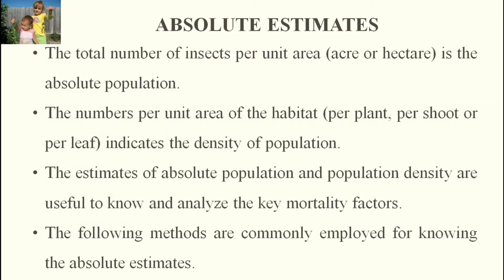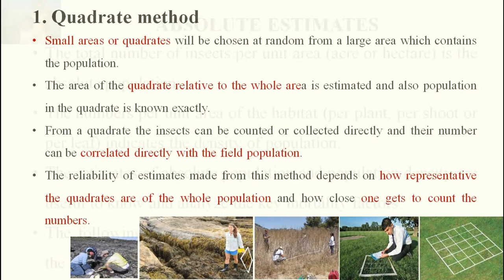Absolute estimates means the actual number of insects present in a unit area — it may be acre, hectare, or meter square. The number per unit area of the habitat: per plant, per shoot, per leaf, per twig — that is what we have to calculate. We are calculating population density, and by analyzing this we can understand population patterns and key mortality factors.